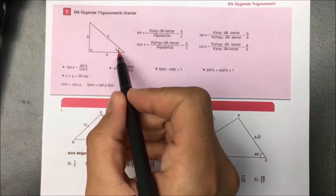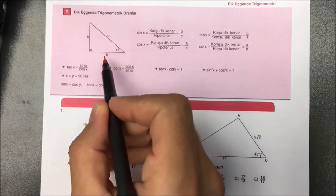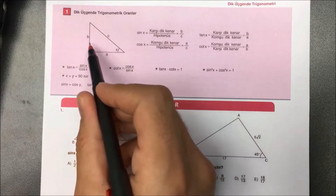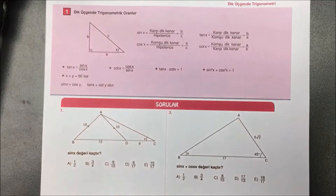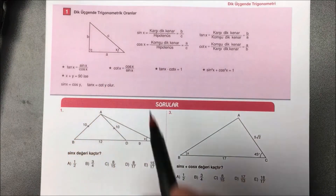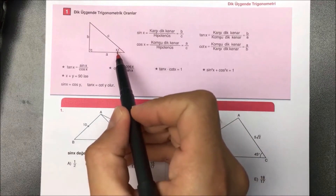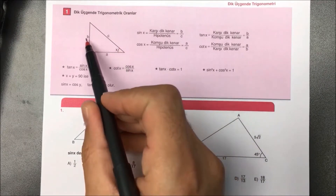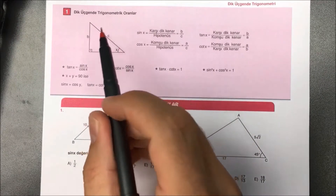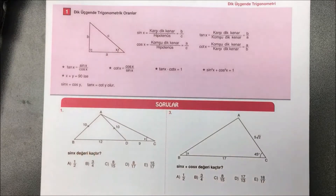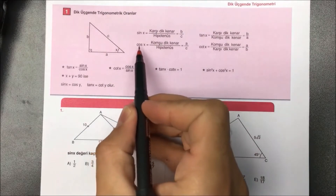Bir dik üçgen düşünün. Açılardan bir tanesi x olsun. Dik kenarlarımız a ve b, hipotenüsümüz c olmak üzere. Sinüs dediğimiz şey, yani sin(x) değeri, karşı bölü hipotenüs demektir. x'in karşısında b var, hipotenüste c var.